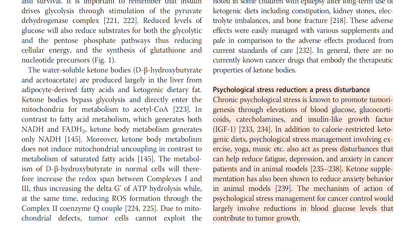Psychological stress reduction serves as a press disturbance. Chronic psychological stress is known to promote tumorigenesis through elevations of blood glucose, glucocorticoids, catecholamines, and insulin-like growth factor (IGF-1). In addition to calorie-restricted ketogenic diets, psychological stress management involving exercise, yoga, and music also act as press disturbances that can help reduce fatigue, depression, and anxiety in cancer patients and in animal models. Ketone supplementation has also been shown to reduce anxiety behavior in animal models. The mechanism of action of psychological stress management for cancer control would largely involve reductions in blood glucose levels that contribute to tumor growth.